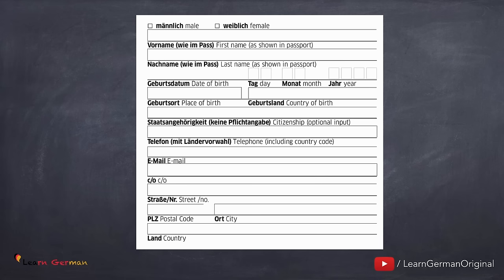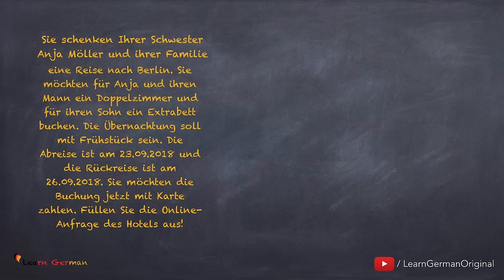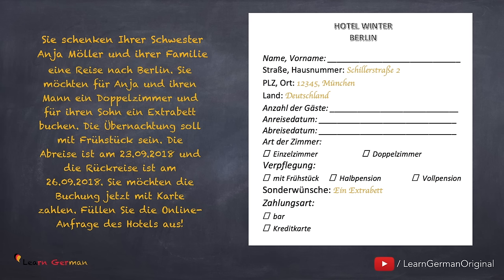If you have to apply for a job, you make a resume — der Lebenslauf. But in the Start-Deutsch-Eins examination, you get a different type of question. For example: They will give Anja Müller and her family a trip to Berlin. Book a double room for Anja and her husband, and an extra bed for their son. Here is the form you are supposed to fill in. You can pause the video here and write your answers, then we can compare. Here are the answers: